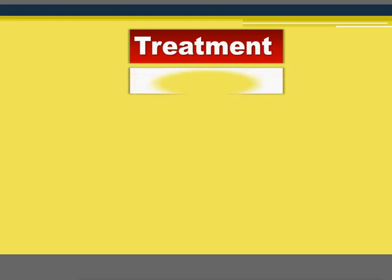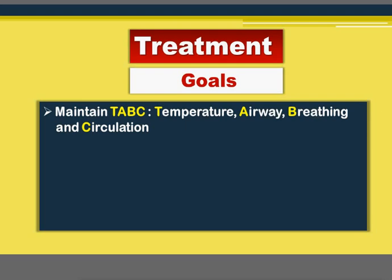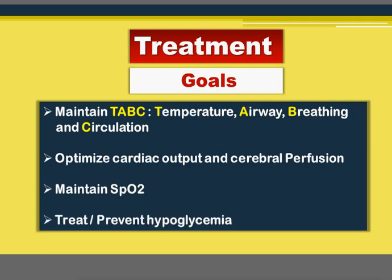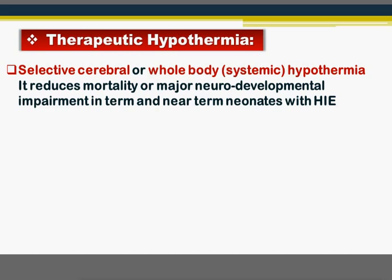Treatment goals for birth asphyxia: first, save the baby's life by maintaining temperature, airway, breathing, and circulation. Optimize cardiac output and cerebral perfusion to improve long-term outcome. Maintain oxygen saturation and prevent or treat hypoglycemia. A key and increasingly important treatment is therapeutic hypothermia. Two types exist: selective cerebral cooling or whole-body (systemic) hypothermia. This reduces mortality and major neurodevelopmental impairment in term and near-term infants (not in extreme preterm). It acts by decreasing the rate of apoptosis and suppressing neurotoxic mediators like excitatory amino acids and nitric oxide.